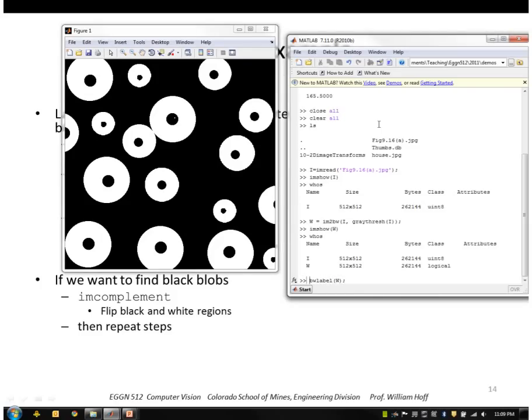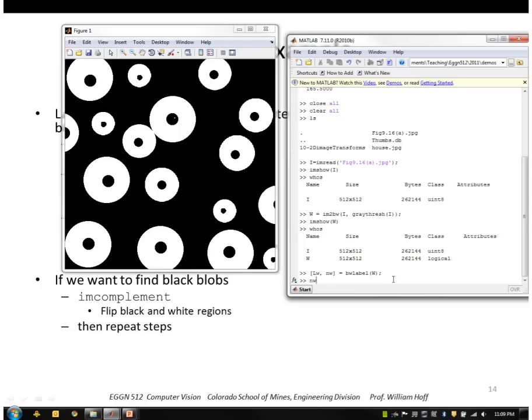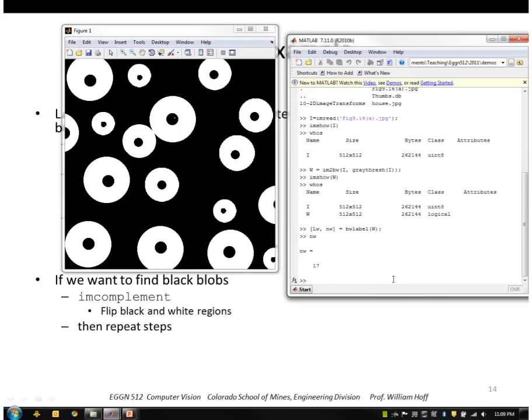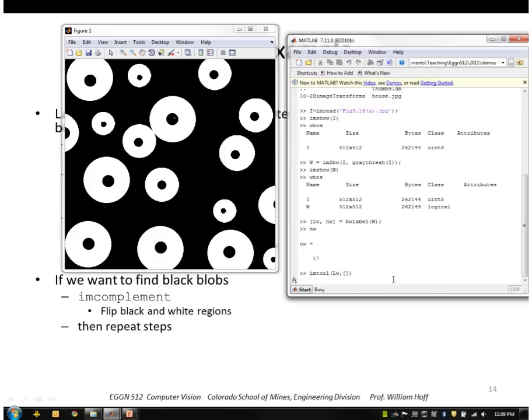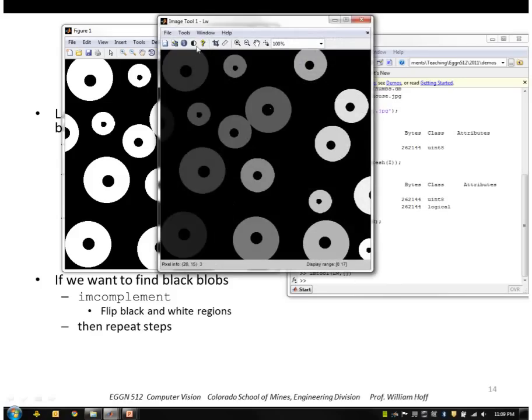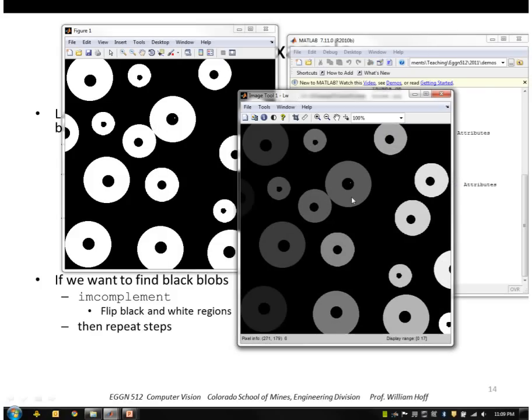It also gives you the option of outputting the number of labels that are found, called NW. So NW, it's found 17 labels. And let me display the label image, LW. So this image is a grayscale image consisting of the label numbers of each connected component.